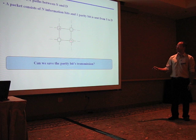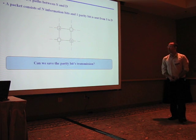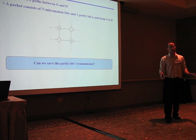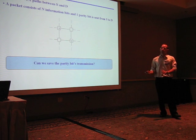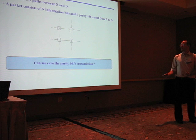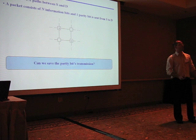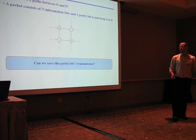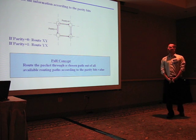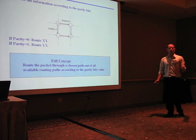A packet consists of N information bits and one parity bit is sent from S to D, from the source to the destination node. Now, can we save the parity bit transmission? Can we achieve the same error protection reliability without actually transmitting this parity bit? And this is the concept of our method.